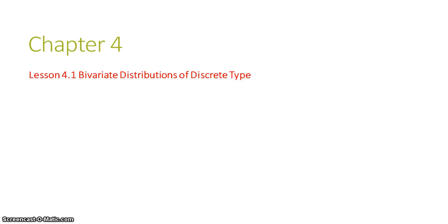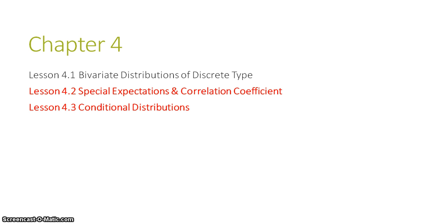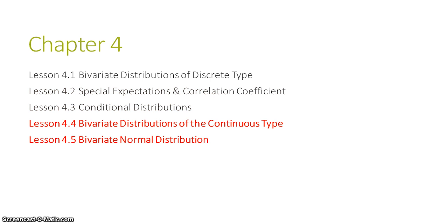So in chapter four, we are going to start this week by looking at bivariate distributions of the discrete type. Next week, we'll be looking at lessons 4.2 and 4.3. We'll learn about special expectations and the correlation coefficient for bivariate distributions, and we'll also look at conditional distributions. The following week, we will look at lessons 4.4 and 4.5, which focus on bivariate distributions of the continuous type, and in particular one special distribution of the continuous type, which is the bivariate normal distribution.